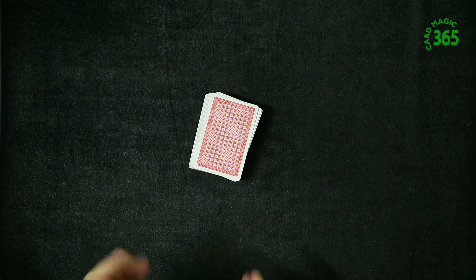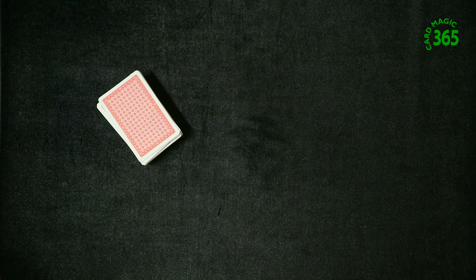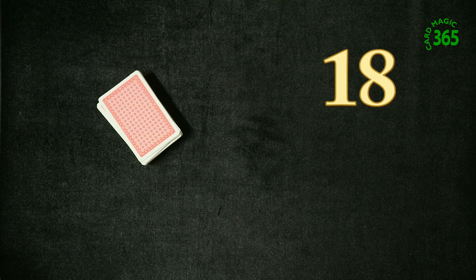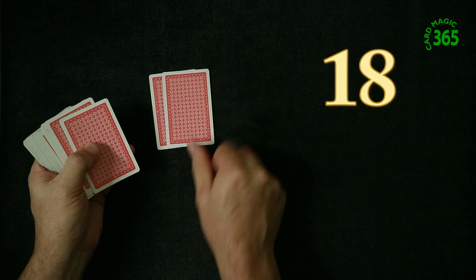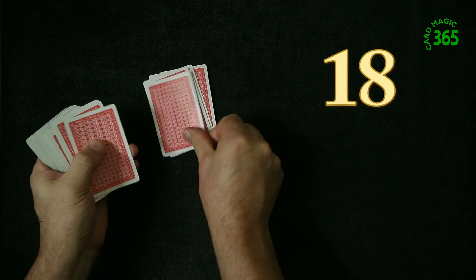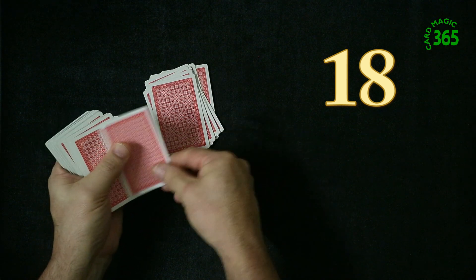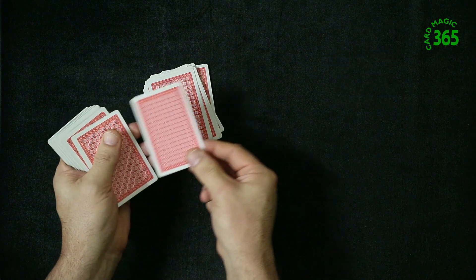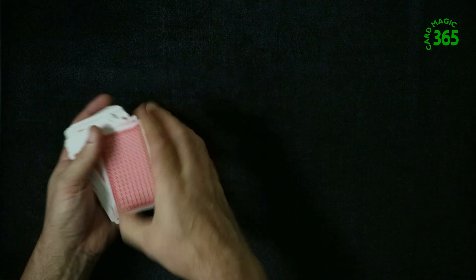Now I can either get you to choose another number, or maybe your friend over here or friend over here may want to pick a random number. Let's make it a bit higher, maybe 12 to 20, and they pick say 18. They will take the cards, they will deal them down 2, 3, 4, 5, 6, 7, 8, 9, 10, 11, 12, 13, 14, 15, 16, 17, 18.